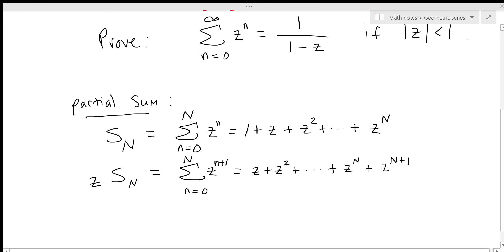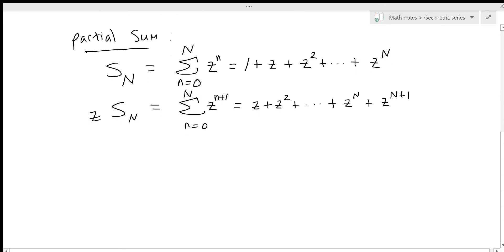And now what we're going to do is to just subtract these two expressions. So let's form the difference: S_N minus z times S_N. And to see what it is, let's go back to our expressions here. So S_N has a z in it, but it cancels with the z in z times S_N. The z squared in S_N cancels with the z squared in z times S_N. And these cancellations go all the way up to z to the n.